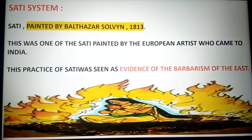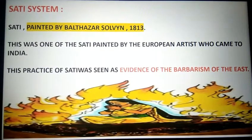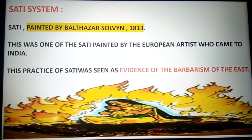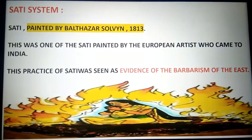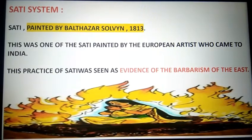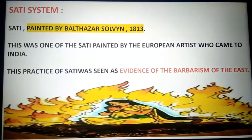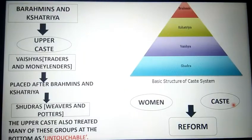A painting in your book was painted by Balthaiser Solvin in 1813 — he was a European artist who came to visit India. This painting shows us what the practice of sati was: if a husband passed away after marriage, the wife was also made to commit sati — she was burned at his funeral. This was a crime; burning a living person alive is cruelty.